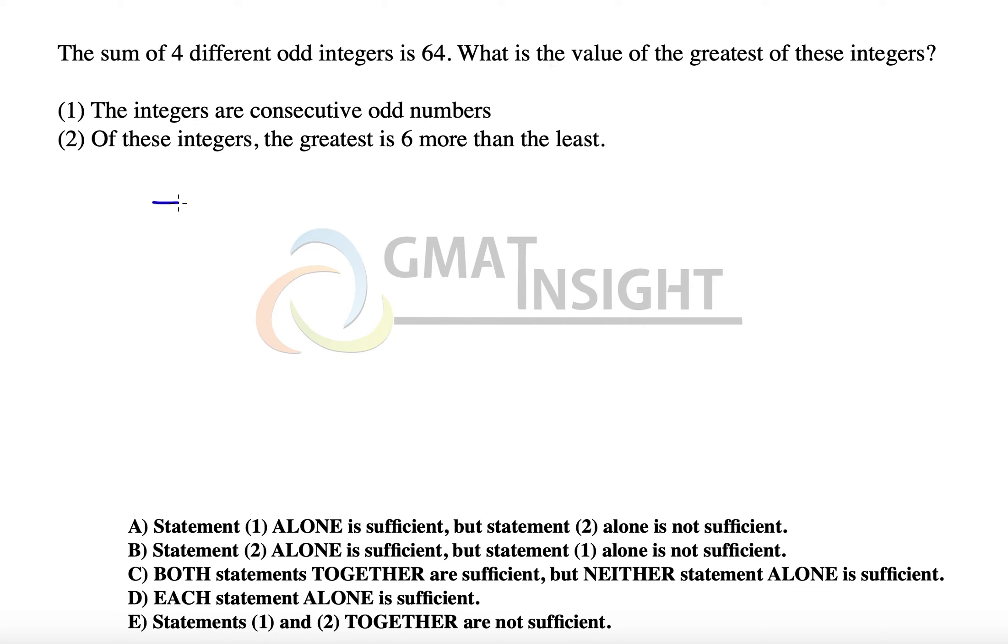Let's say we have these four integers, their sum equals 64. We have to maximize the biggest of them, which simply means we have to minimize the rest. This principle works all the time: if the addition of certain numbers is constant and one has to be maximized, then everything else should be minimized, or vice versa.